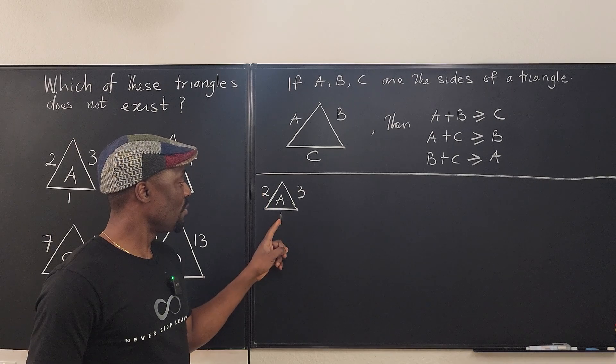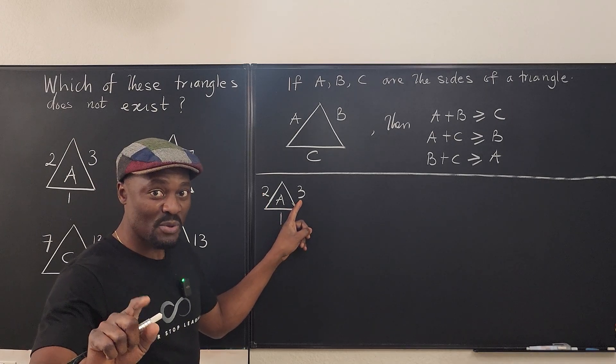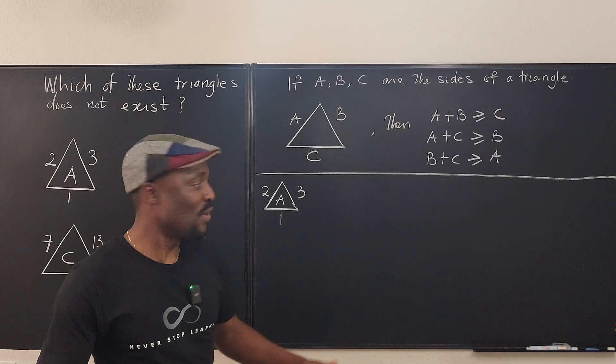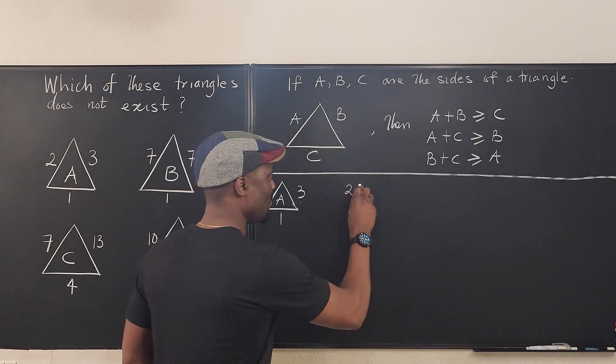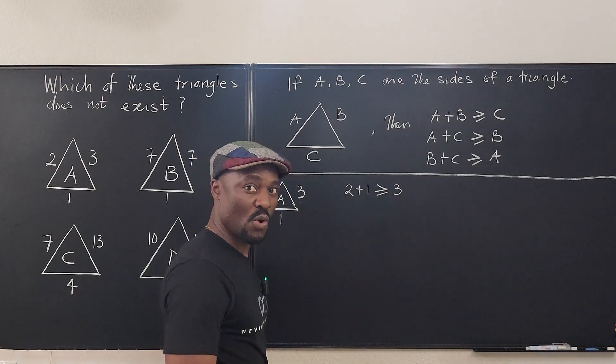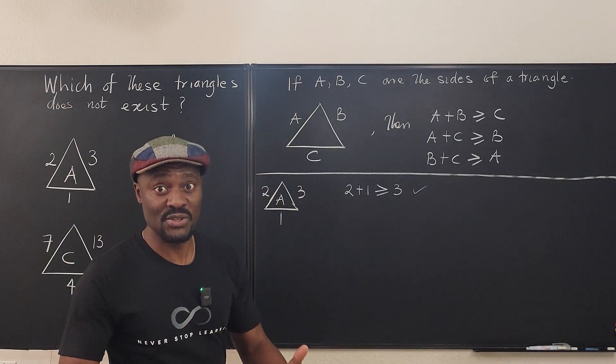A plus C, 2 plus 1 is greater than or equal to 3. Remember, when you have an or statement, as long as either of them is true, it is true. So we can see that 2 plus 1 is greater than or equal to 3. But in this case, it is equal to 3, which also satisfies the triangle inequality condition.